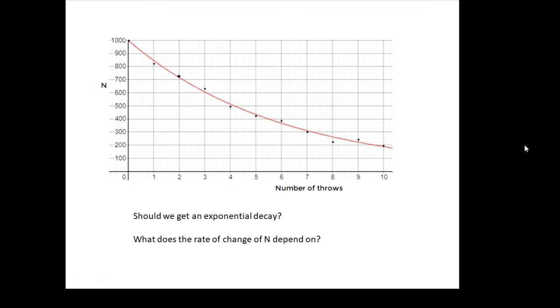Should we get an exponential decay? Well, the rate of change of n is dn/dt. In this case, that will be how many dice are taken away every throw. Now, will the number of dice taken away be proportional to the number of dice? And the answer is, well, yes, it will. The more dice you've got, the more sixes you roll, the more sixes you will take away. So dn/dt, if t is the number of throws, dn/dt will be proportional to n. It will be an exponential decay.